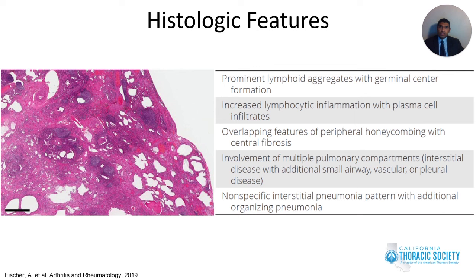Biopsies are not routinely performed, but certain histopathological findings would suggest an underlying connective tissue disease when clinical signs and serologies are not diagnostic. Histological features suggestive of CTD include prominent lymphoid aggregates with germinal centers associated with peripheral honeycombing, fibrosis or NSIP with organizing pneumonia pattern, and involvement of multiple pulmonary compartments — including the airways, vasculature, and pleura along with the parenchyma.